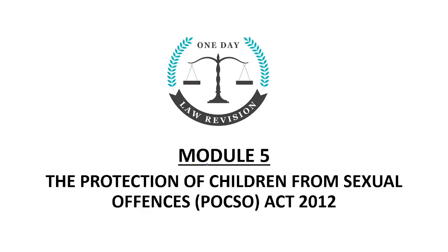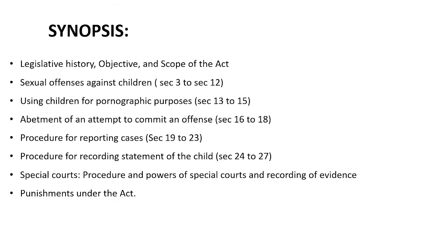Hello students, welcome to the one-day law revision module 5: The Protection of Children from Sexual Offenses (POCSO) Act 2012. Let's quickly go through the synopsis first. We will cover the history, objective and scope of the act; sexual offenses against children (sections 3 to 12); using children for pornographic purposes (sections 13 to 15); abetment of and attempt to commit an offense (sections 16 to 18); procedure for reporting cases (sections 19 to 23); procedure for recording statement of the child (sections 24 to 27); special court procedure and powers (sections 28 to 32); and procedures and powers given in sections 33 to 38.